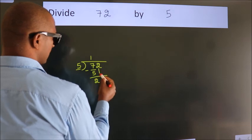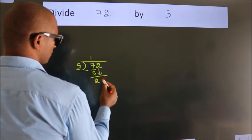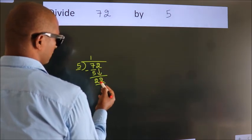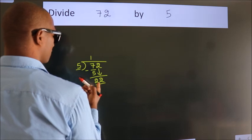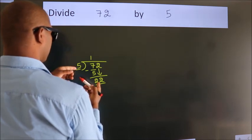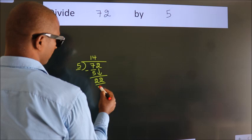After this, bring down the beside number. So, 2 down. So, 22. A number close to 22 in 5 table is 5 fours 20.